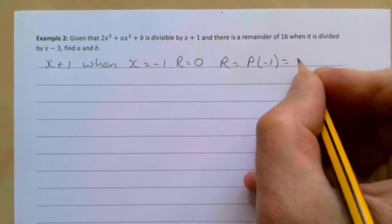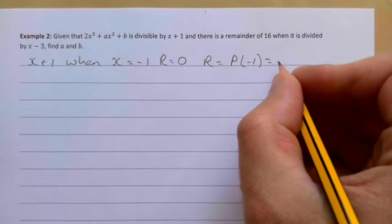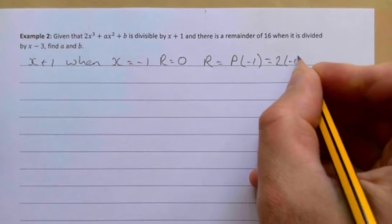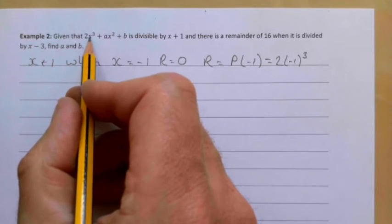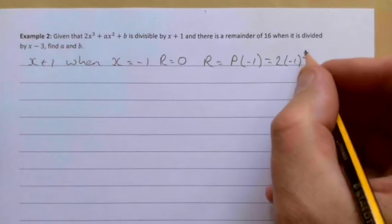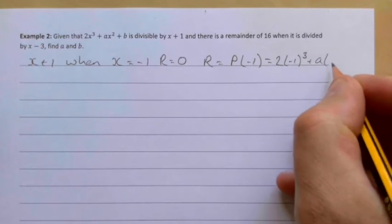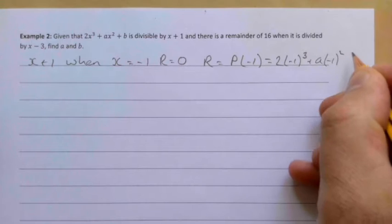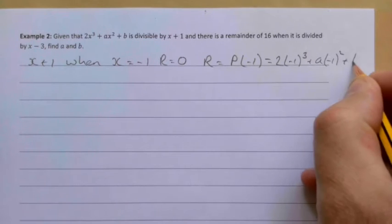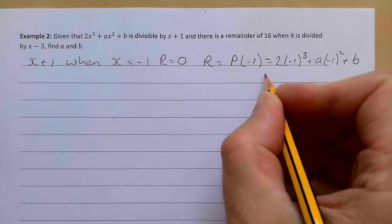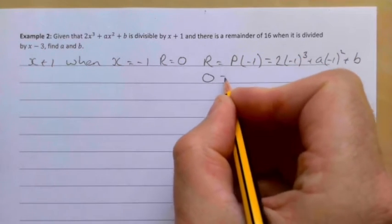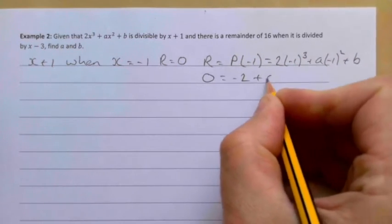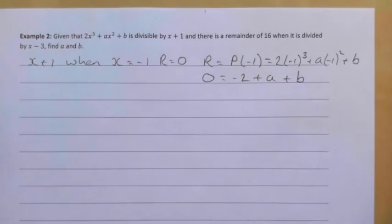So 2(-1)³ - see where I'm getting this from? Anytime I see an x, I'm replacing it with -1 - plus a(-1)² + b. Tidying that up, we know r = 0, so 0 = -2 + a + b.